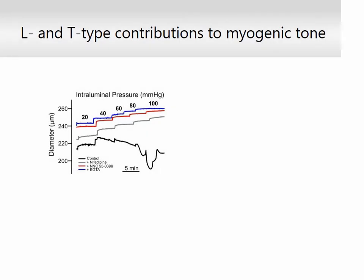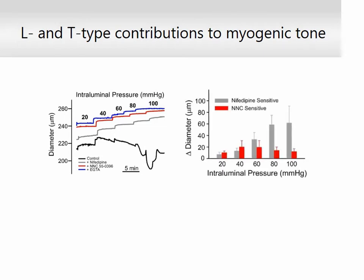We next sought to assess the relative contribution of L- and T-type conductances to tone development in human cerebral arteries. In myogenically active human arteries, L-type calcium channel suppression using nifedipine profoundly dilated arteries, while subsequent T-type channel inhibition elicited modest vasodilation. Vasomotor responses to nifedipine and NNC-550396 displayed divergent dependence on intraluminal pressure.